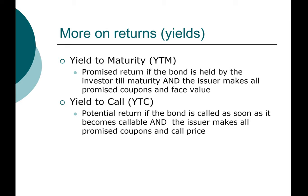The only main difference between computing the yield to maturity and the yield to call is two things. One is the future value — for yield to maturity it is the face value of the bond, for yield to call it is the call price. And the other difference is time — for yield to maturity the time is the maturity date, and for yield to call the time is as soon as it becomes callable. So those two items — the size of the future value and the timing — affect the difference in the yield.